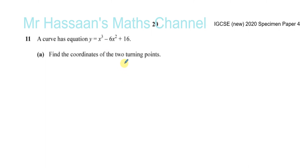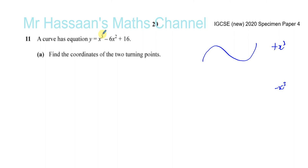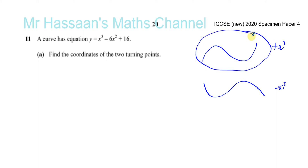This is a cubic curve, and a cubic curve will have a particular shape — we should know this from Graphs of Functions. If the coefficient of x cubed is positive, it will have a shape where it goes up, down, and up again. If the coefficient is negative, it goes down, then up, then down again. A turning point is a place where the curve turns from going up to going down, or from going down to going up. The question tells us there are two turning points.